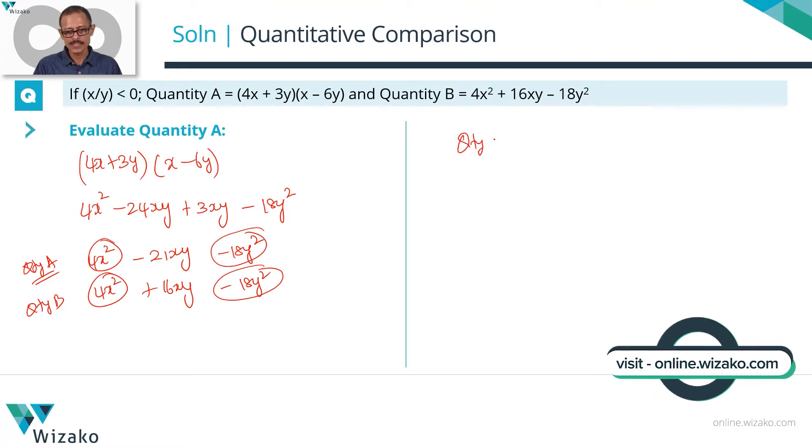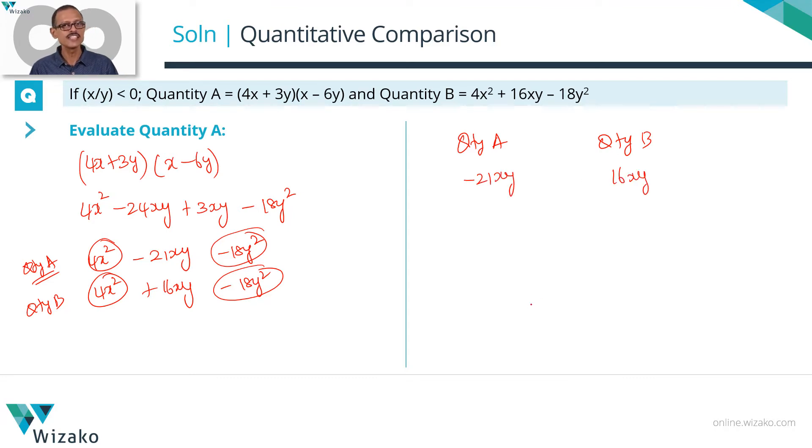So the quantity comparison between A and B for us basically boils down to comparing -21xy or 16xy. Which of these two quantities is greater? Or will you be able to compare it at all or not?